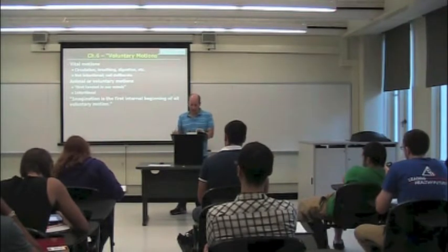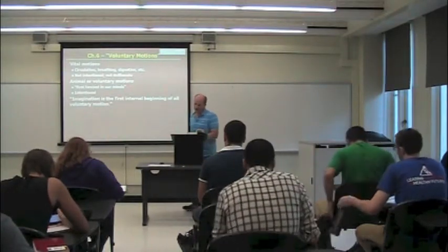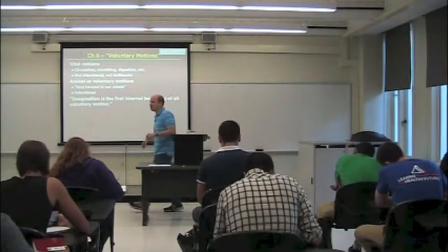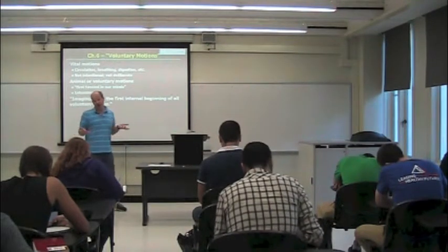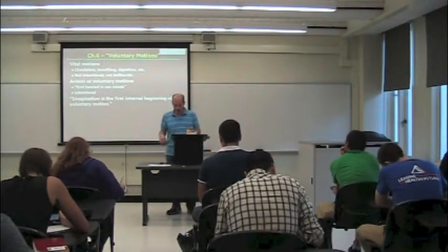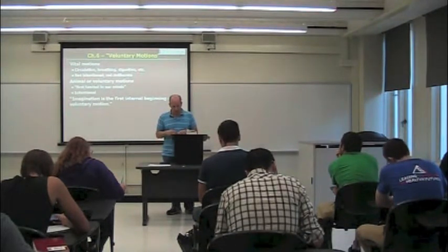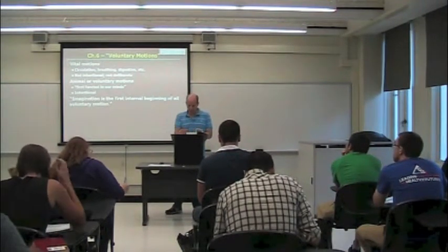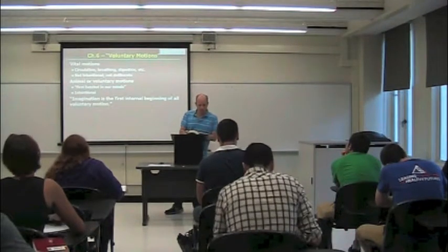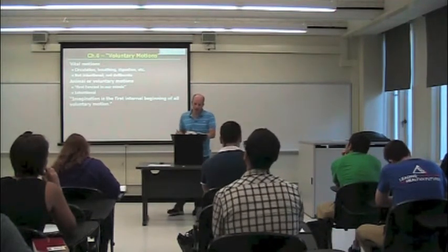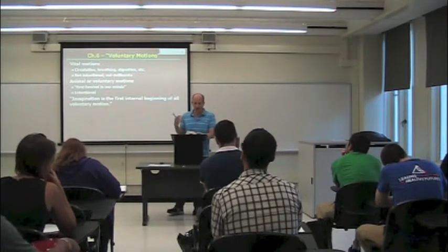So this is further down on page 25. He says that it is evident that the imagination is the first internal beginning of all voluntary motions. So imagination is either going to be prompted naturally or through experience. So I want to talk for a second about how experience could prompt a voluntary action. At the end of that paragraph, over on the top of page 28, it says these small beginnings of motion within the body of man, before they appear in walking, speaking, striking, and other visible actions, are commonly called endeavor.